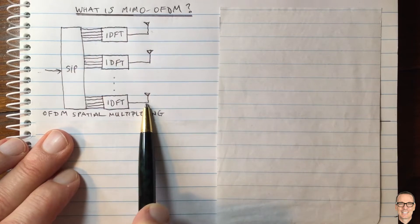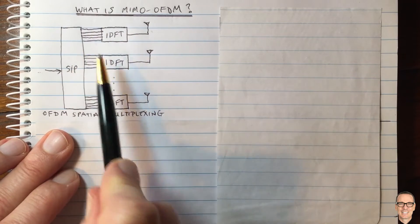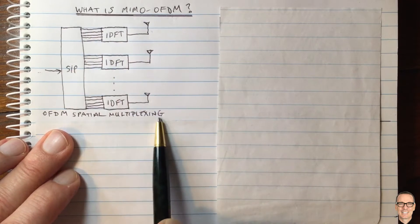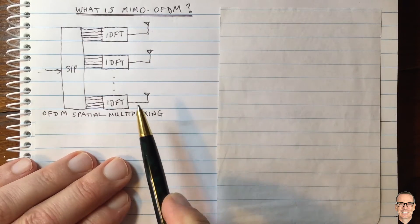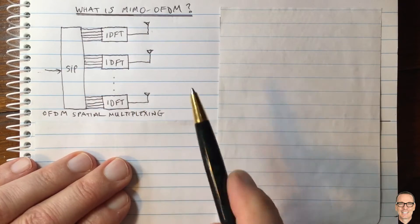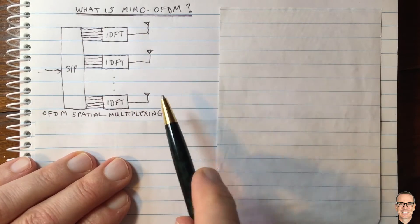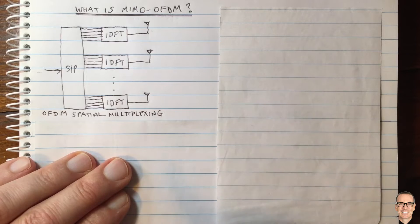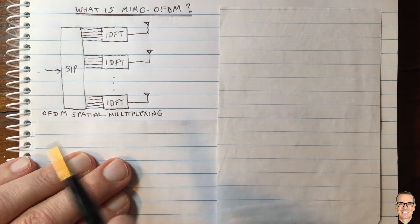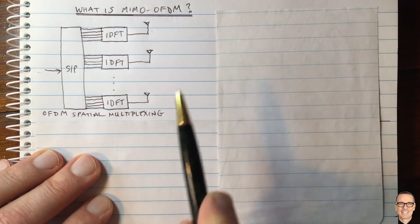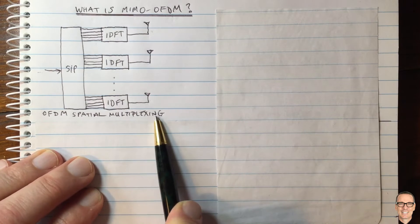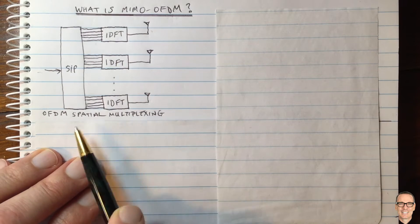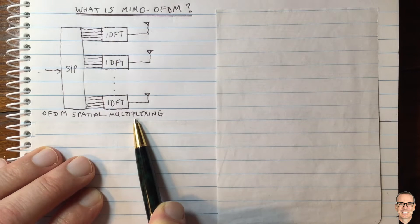All that's happening here is that the data stream is being put onto each individual subcarrier of each individual antenna — that is just multiplexing. Then you use the rich scattering in the MIMO channel to undo all of that at the receiver. This works well when the channel is a fully rich channel and we can do spatial multiplexing.